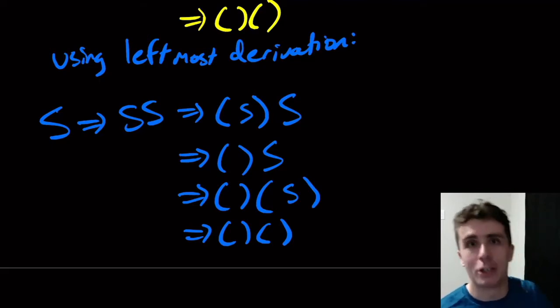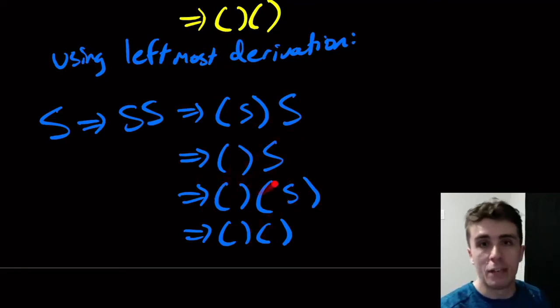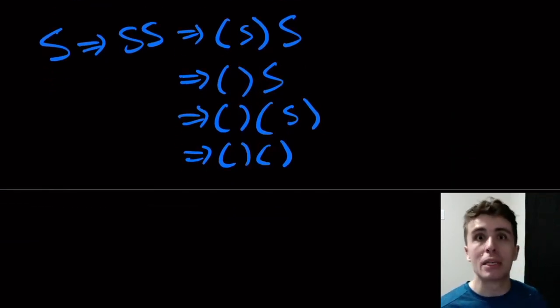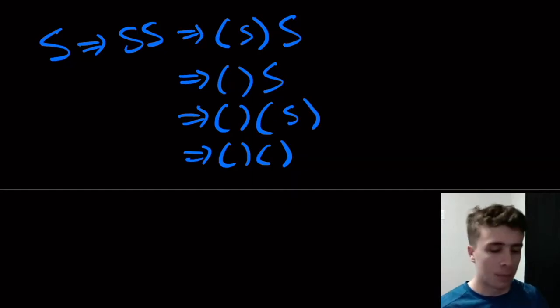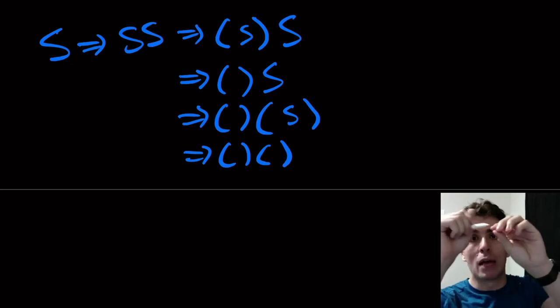In any derivation I can always find a leftmost one because there's always a leftmost variable. I can always work with it because it's a context-free grammar. It doesn't matter what the context in which the variable is, so I can work with it completely freely of all the other variables. I might as well just choose the leftmost one.